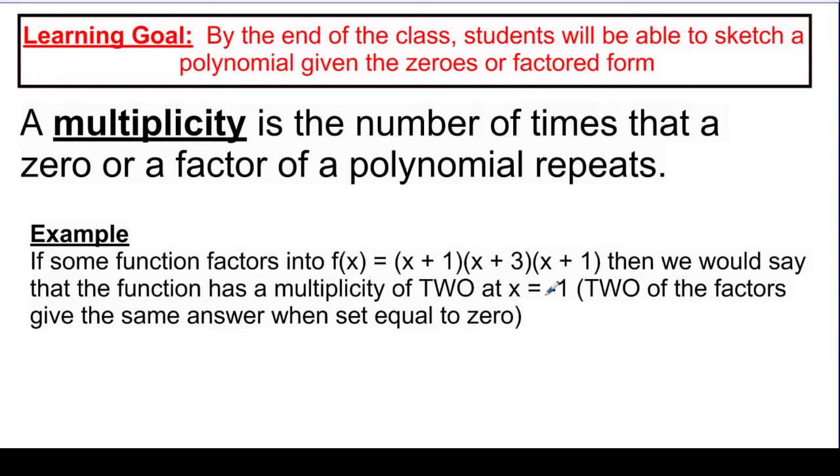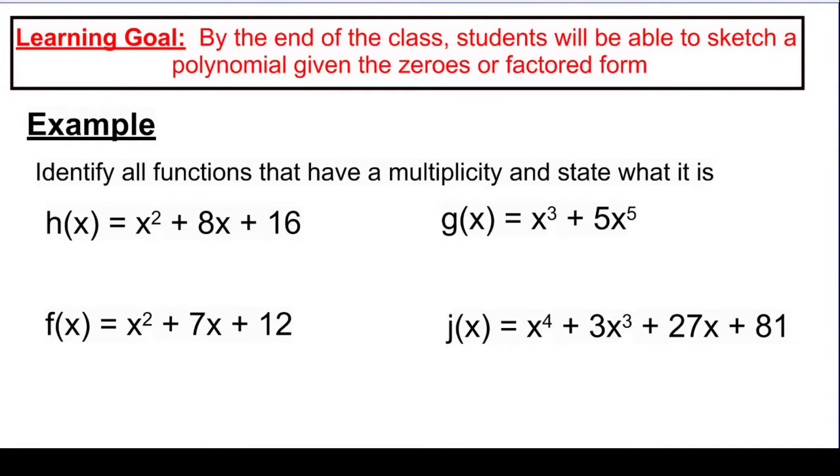When we say with a multiplicity of 2, what we're describing to people is that we got that same answer from two different factors. So what we're going to do is just look at some polynomials and see how multiplicity might show up, and then we're going to see how it affects the graph. In this first group of problems, our job is just going to be to factor the expressions, and we're going to look for any repeating factors, and then we're going to state a multiplicity.